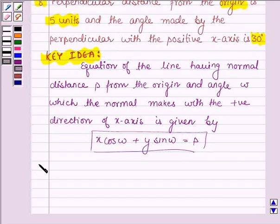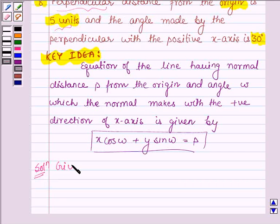Let's now start with the solution. Here we are given that the perpendicular distance from the origin is 5 units, so this implies P, which is the normal distance, equals 5 units. And the angle made by the perpendicular with the positive x-axis is 30 degrees, so omega equals 30 degrees.